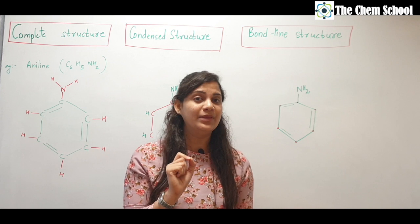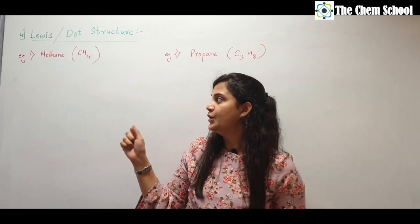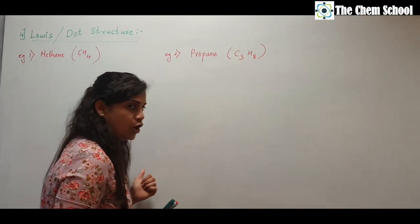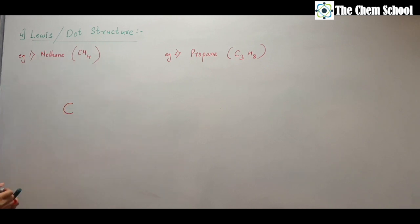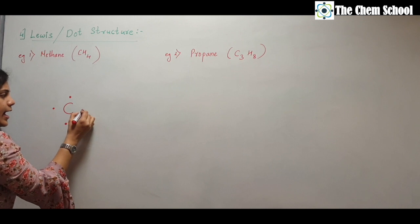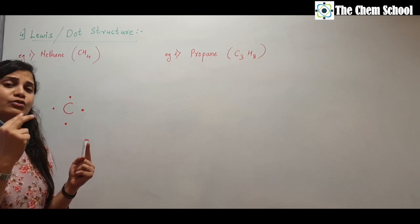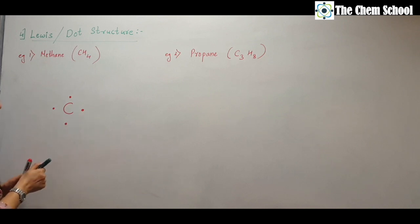From the five types of structural representation, we have done three. Now let's talk about the fourth: the Lewis or dot structure. Taking methane (CH₄) as an example — carbon has four electrons in the valence shell, so we show those four electrons. Each bond has two electrons. Carbon shares one electron with each hydrogen, forming a covalent bond — one bond per hydrogen.